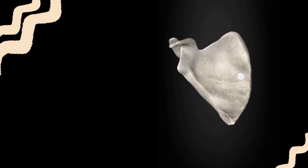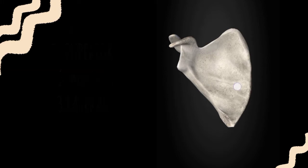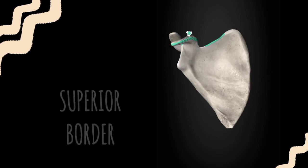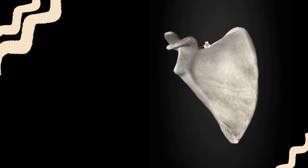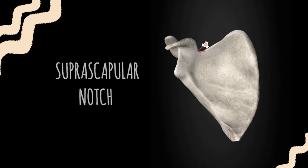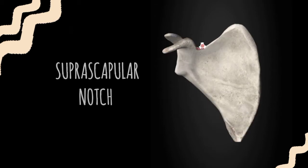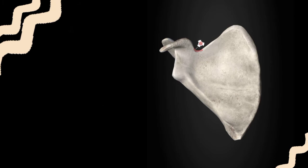Now let's discuss the borders of the scapula. The scapula has three borders: superior, medial, and lateral. The superior border of the scapula has a notch called the suprascapular notch, which is located on the superior border and provides passage to the suprascapular nerve.